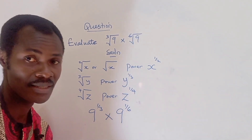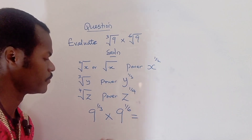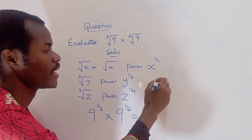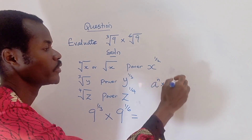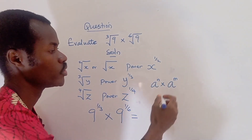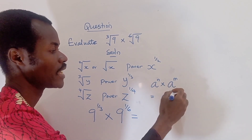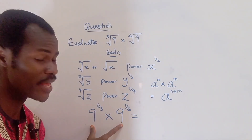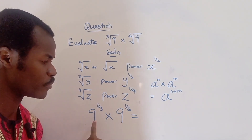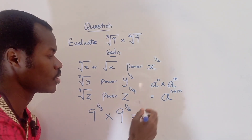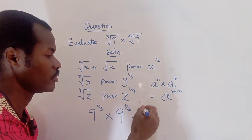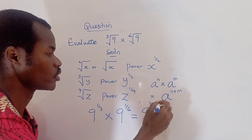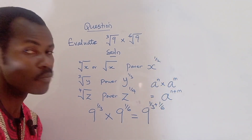Now that we have this, it is simpler to solve. Applying the law of indices: remember, if we have the same base — say a raised to power n times a raised to power m — all you do is pick one base and add the powers. We are going to apply this law, so I'll have nine raised to the power of one third plus one sixth.